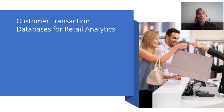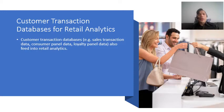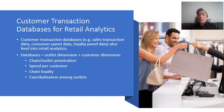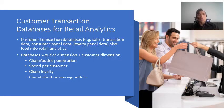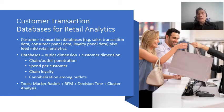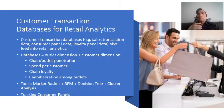Customer transaction databases for retail analytics are important because we look at sales transaction data and consumer panel data through loyalty panel data, which can feed into retail analytics. By checking databases using both the outlet dimension and the customer dimension, we get a good picture of chain outlet penetration, spend per customer, chain loyalty, and cannibalization among outlets. This can be done using a variety of tools: market basket analysis, RFM, decision tree, and cluster analysis — all to fully track consumer panels and understand purchasing habits.